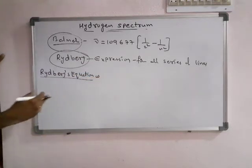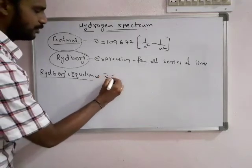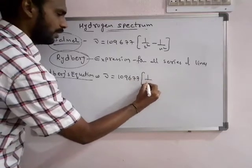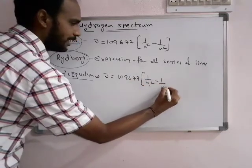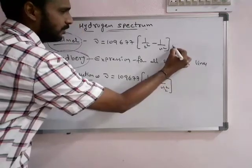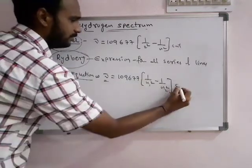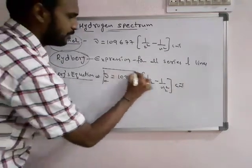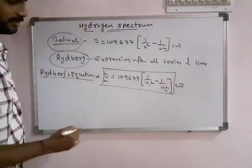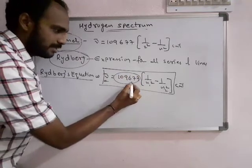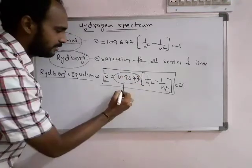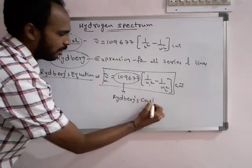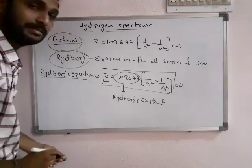The Rydberg equation is: nu-bar equals R times (1 by n1 squared minus 1 by n2 squared). The unit is centimeter inverse as it is a wave number. This equation is called the Rydberg equation, and R equals 109677 centimeter inverse, known as the Rydberg constant.